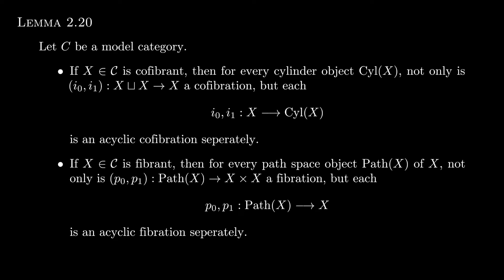Dually if x is fibrant, then every path space object factors diagonal as a weak equivalence followed by a fibration, whose components are each an acyclic fibration.